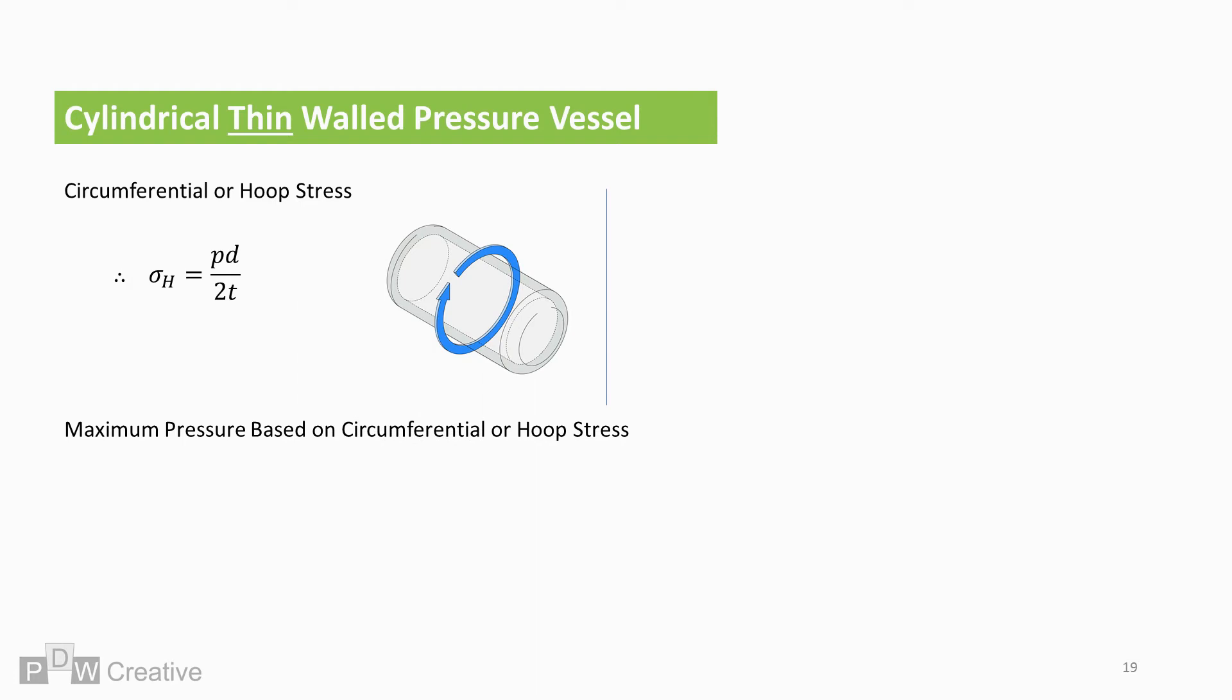It therefore goes that maximum pressure is calculated based on hoop stress. So P, or pressure max, is 2 times T times hoop stress over D.